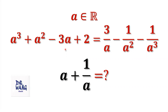If we want to solve this equation directly to find the value of a, it's difficult, because if we want to get rid of the denominator of a to the power 3, this equation — as you can see — is of degree 6.